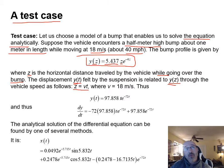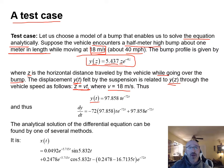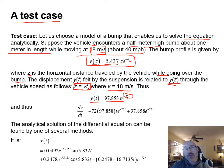With velocity v = 18 m/s, we substitute z = v·t into the bump profile. This gives y(t) = 97.858·t·e^(−72t), where the coefficient 72 comes from multiplying the original exponent by v = 18.